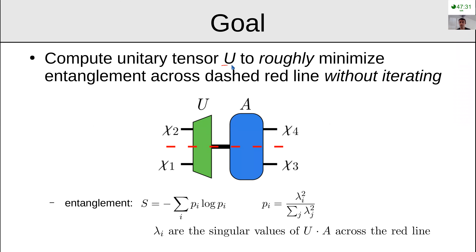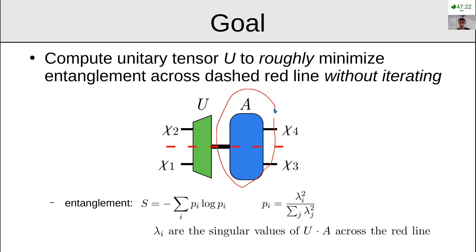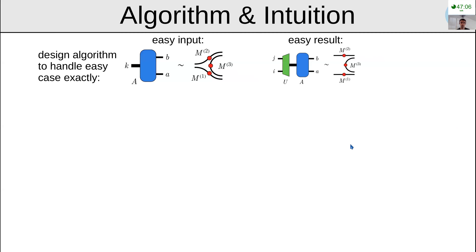Maybe it can lead to smarter algorithms for optimizing tensor networks and their disentangling unitaries. More precisely, my goal is to compute a unitary tensor that can roughly minimize the entanglement across a cut. Given some tensor A, I want to calculate a tensor U such that entanglement across the horizontal line is minimized, at least approximately, and I want to do this without any iterations.